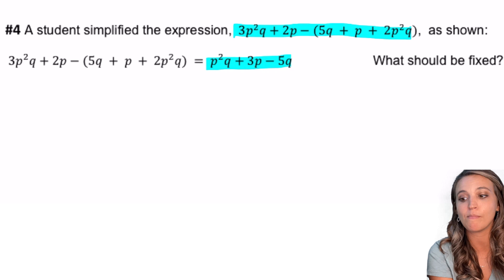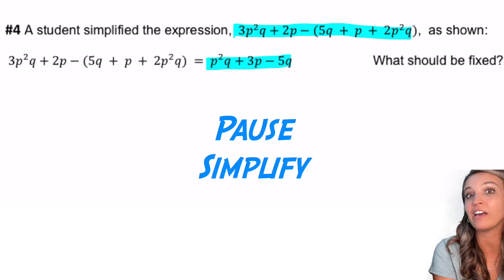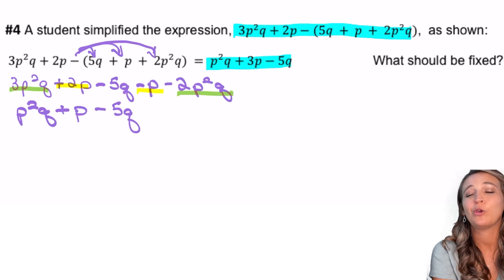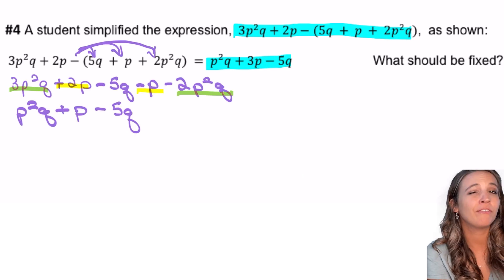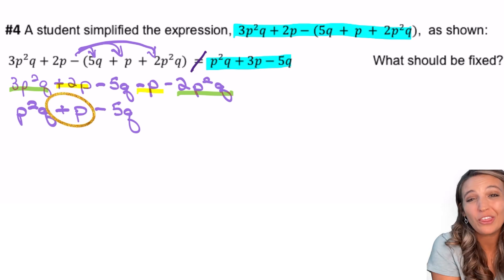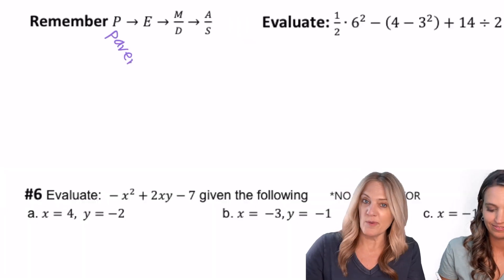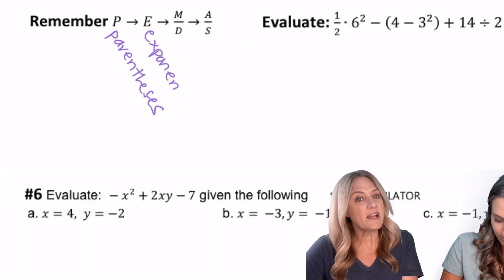Number four: it looks like a student simplified the given expression to p²q + 3p − 5q. Did they do it correctly? Take a moment to simplify the expression. p²q + p − 5q is what it simplifies to. So was the student correct? No, they made a mistake. They got 3p, probably because they didn't distribute that negative sign.